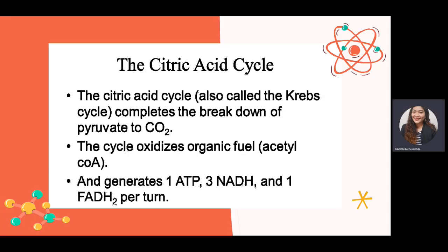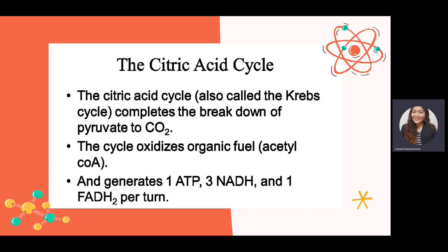The Krebs cycle, also known as the citric acid cycle, is the second stage of cellular respiration. It completes the breakdown of pyruvate and occurs inside the mitochondria. Pyruvate enters the powerhouse of the cell, but it first needs coenzyme A to attach to it before entering the Krebs cycle.